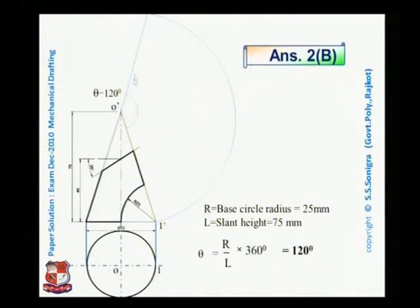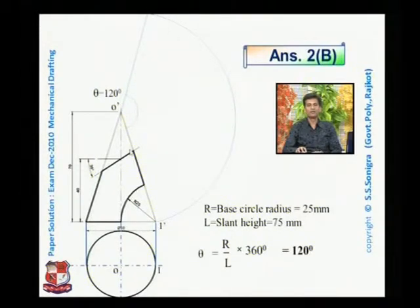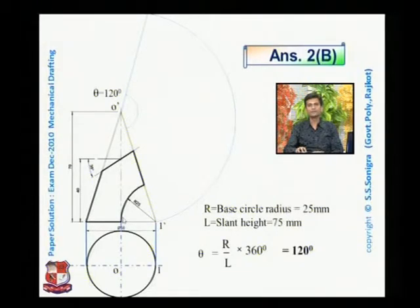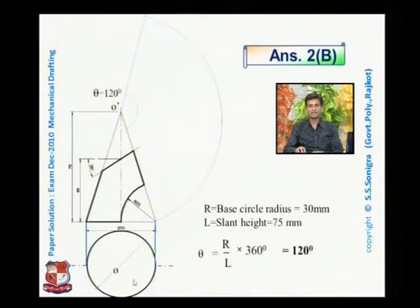This arc with the included angle of 120° and the length of the slant edge of 75 millimeters represents the development of the full cone. Now, this cone is cut at certain portions — somewhere here and somewhere here. So to draw the developed portion, let us divide this circle into eight equal parts like this.